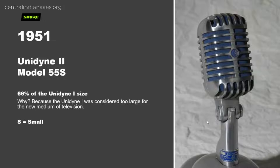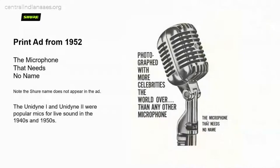Twelve years after the Unidyne One, Shure introduced the Unidyne Two — the 55S — which is still the same size made today. Television was a new medium, and TV producers told Shure that the Unidyne One was too large, covering too much of a person's face on camera, so Shure made a smaller version at about 66% of the size. This microphone has been in production in one form or another from 1951 through 2021 — potentially 70 years.